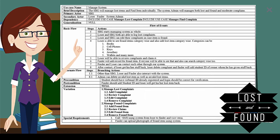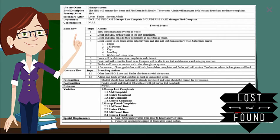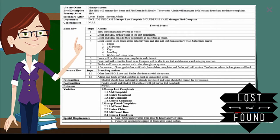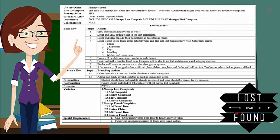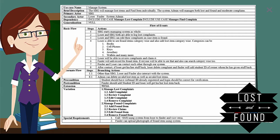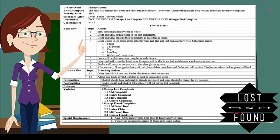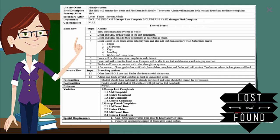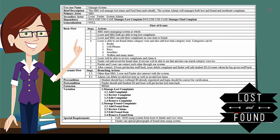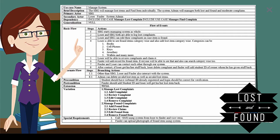Use case name is the name given in the use case diagram — here, manage system. Brief description is one or two lines explaining what functionality this use case performs. Primary actor is the actor directly communicating with this use case — here, SBG. Secondary actor is one not directly communicating but with some communication link to the use case — loser, finder, and system admin will be our secondary actors.